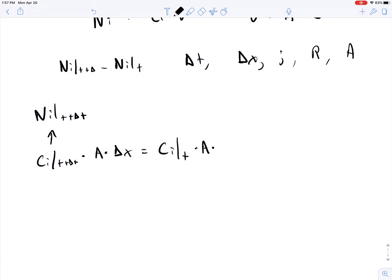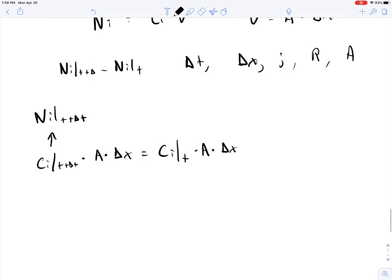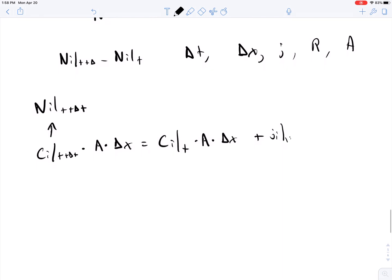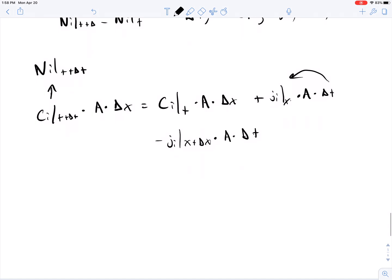And this is going to be equal to what was there before, C I at the time interval time T, times A times delta X, plus all of the changes that take place in this material. So this would include the flow of material coming across that boundary at position X times A times delta T for the time interval over which that takes place, minus what leaves, which would be minus J sub I at position X plus delta X times the area times the time interval.